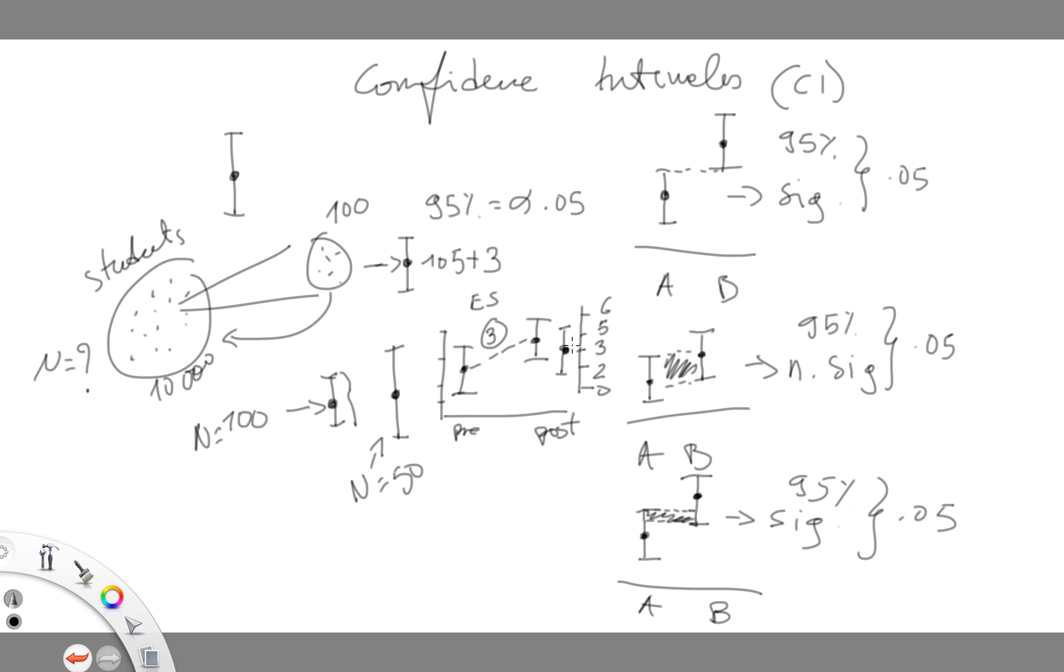Now in this case, the mean difference or the change between pre and post of three points or whatever that was is statistically significant because the lower bound of the CIs on the mean difference does not reach the zero value. If it did reach the zero value, then it would be non-significant. But here the test is significant, and if we use again 95% confidence intervals, this is 0.05.